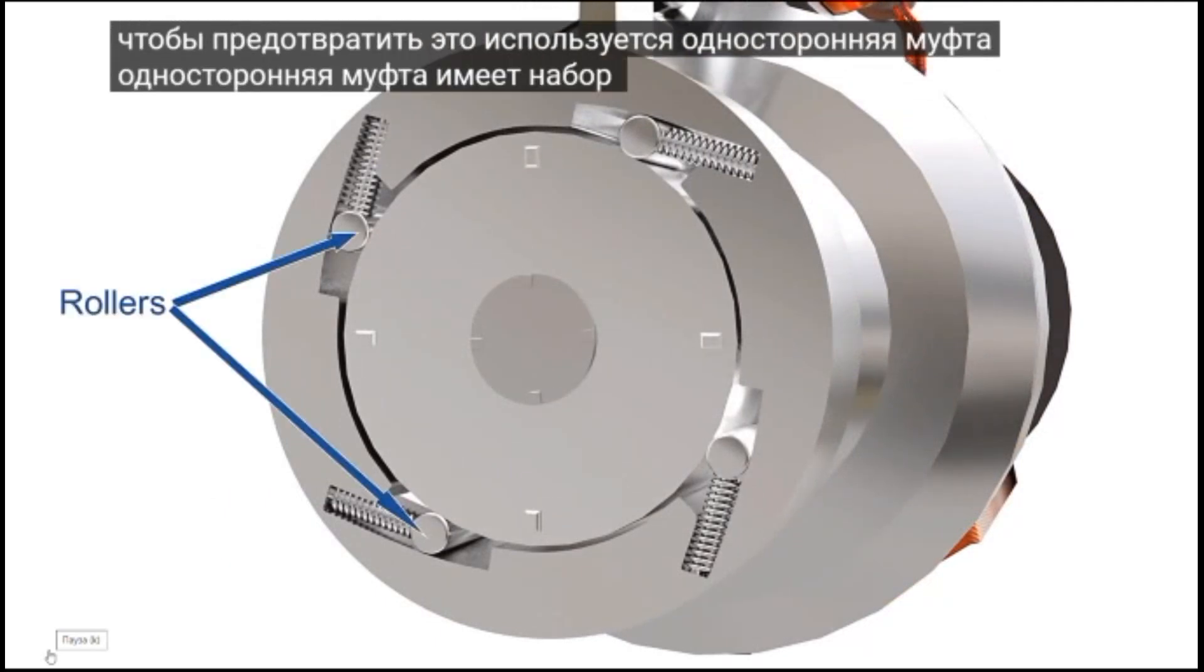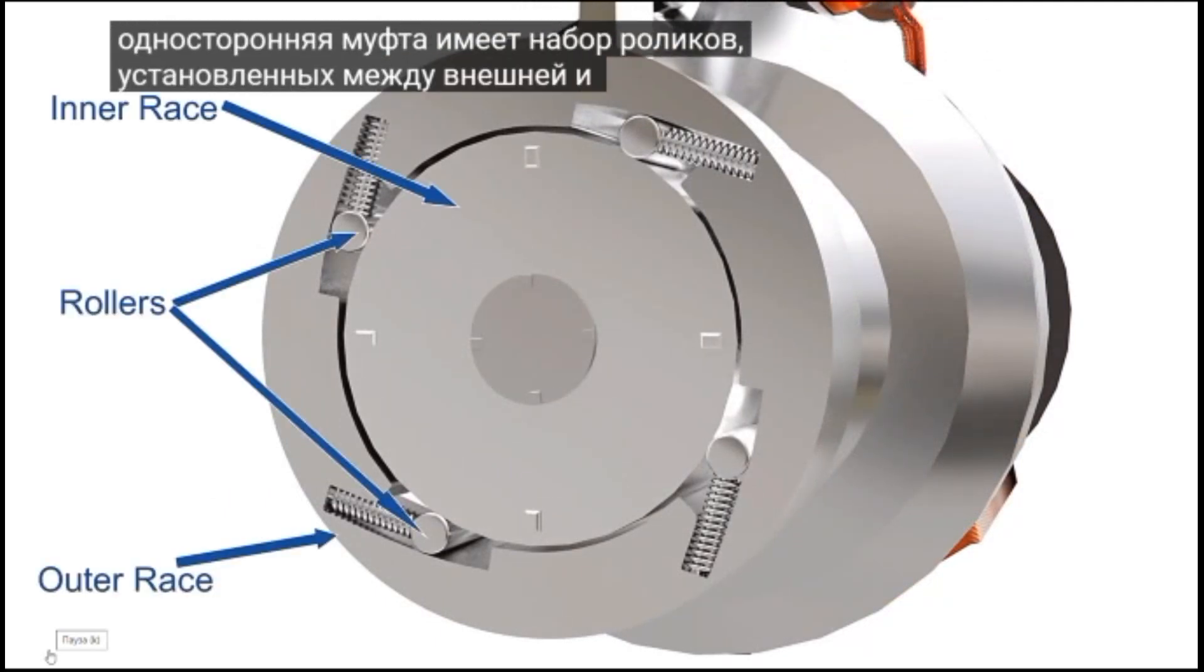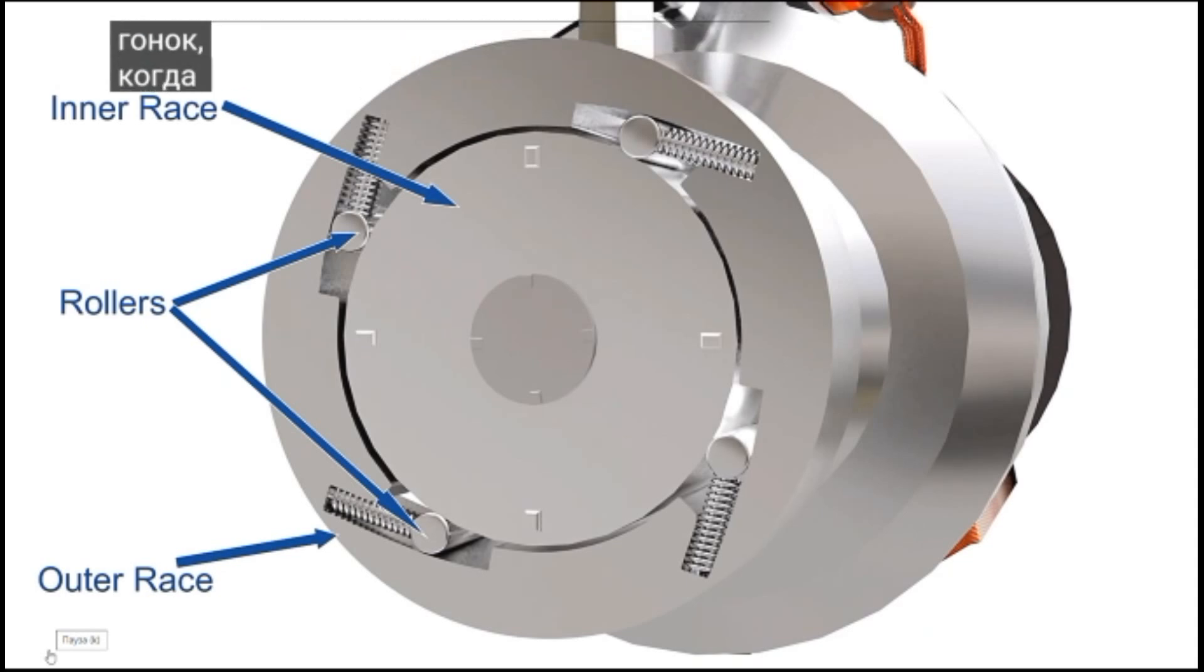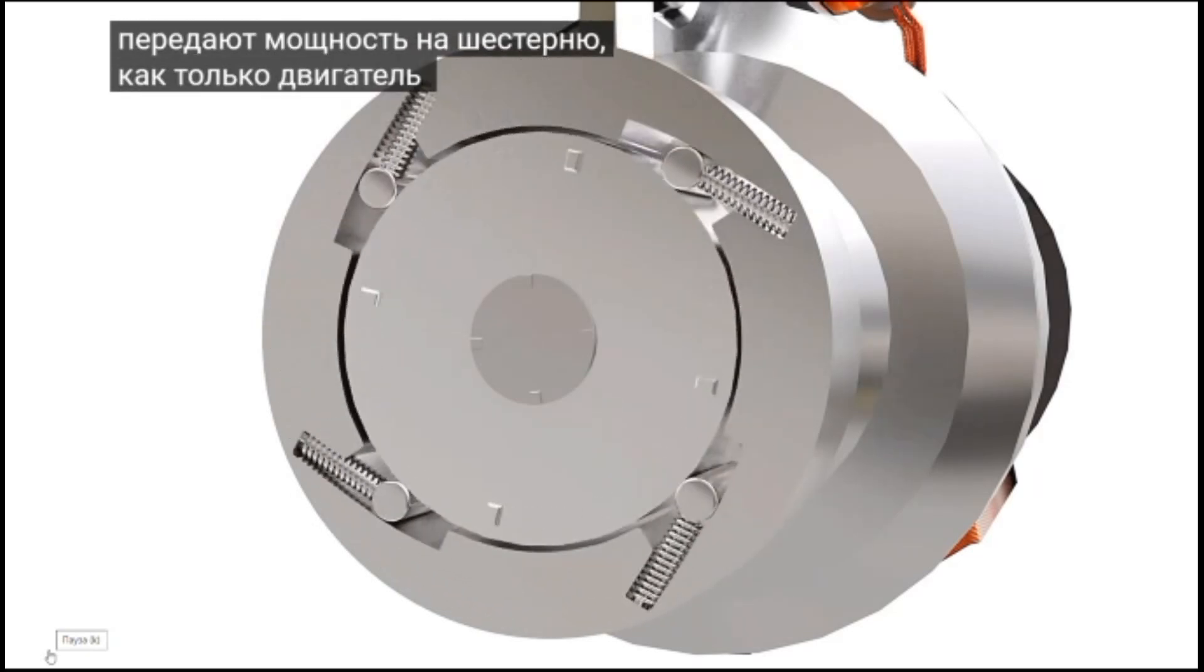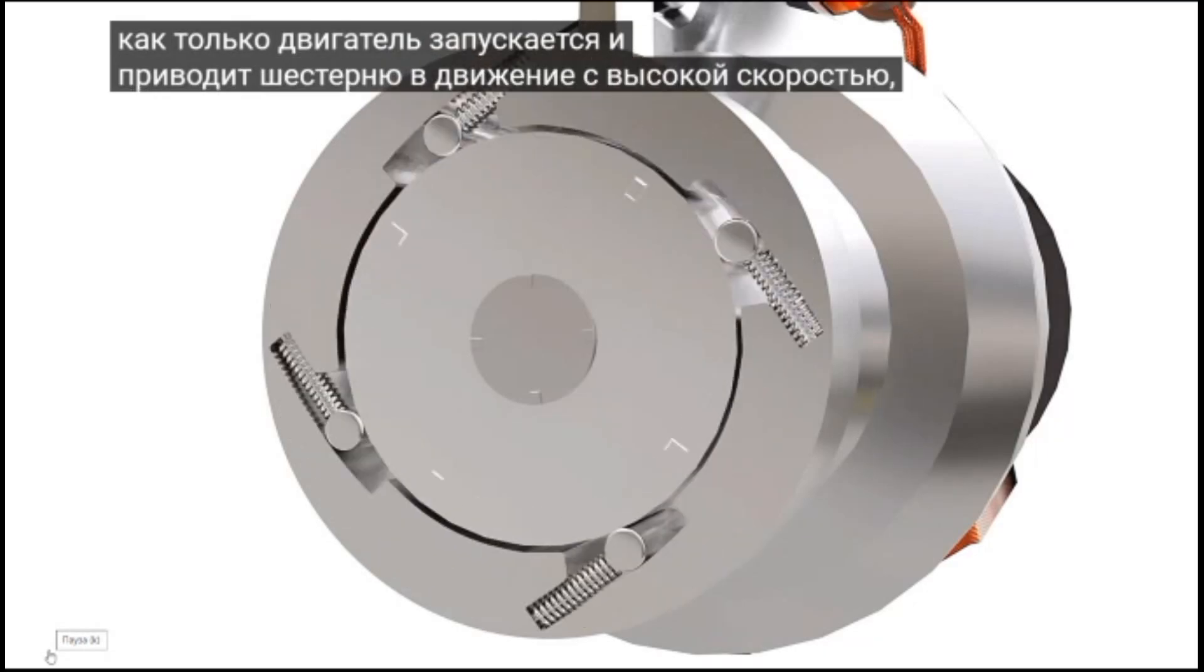The one-way clutch has a set of rollers installed between the outer and inner races. When the outer race is rotated by the motor, the rollers get trapped and transfer power to the pinion. As soon as the engine is started and drives the pinion at a high speed, the rollers become free and the power transmission is stopped.